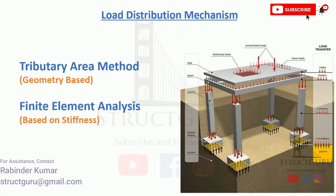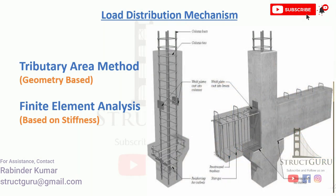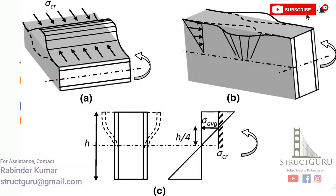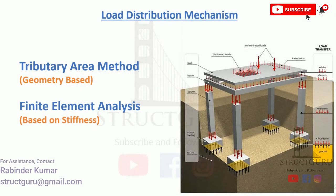Before explaining the tributary area method, let's discuss finite element analysis. In this method, the load path is decided based on the relative stiffness of each member in a structure. This means that a stiffer member will take more load as it will possess less deformation. Generally, beams have greater out-of-plane stiffness and slabs have low out-of-plane stiffness, so the slab load will be transferred to the beam as beams provide greater resistance to deformations.